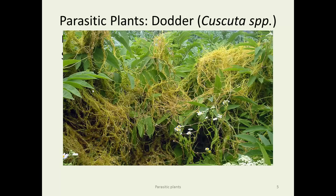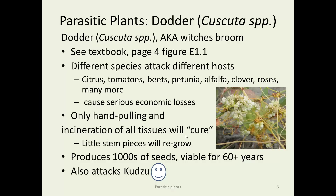Here's dodder — it looks like silly string sprayed all over a plant. This one is parasitizing elderberry. The big wider leaves are the host plant, and the orange strings are the dodder. The little white flowers are the flowers on the dodder, not the daisy fleabane flowers in the lower right of the picture. Here is a closer photograph of the actual flowers. These are angiosperms — they produce pollen, stigma, style, ovary, stamens, and anthers. This is dodder, also called witch's broom.